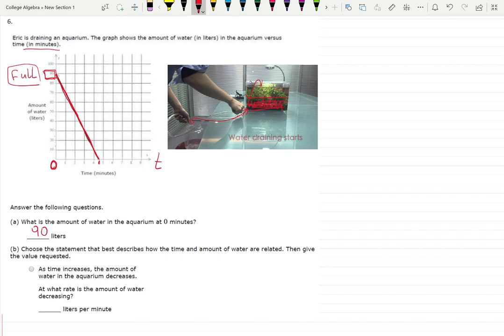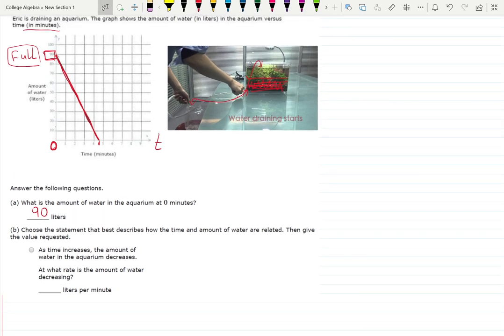It's only 90 liters aquarium, not 60 gallons. Anyway, choose the statement that best describes the relationship. The first statement says as the time increases, the amount of water in the aquarium decreases. And the second statement was: as the time increases, the amount of water also increases.